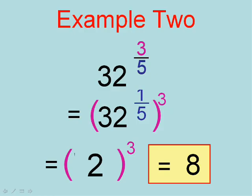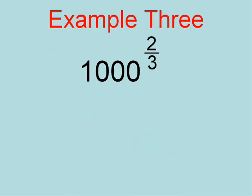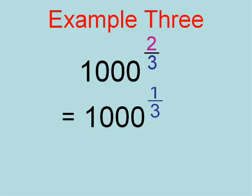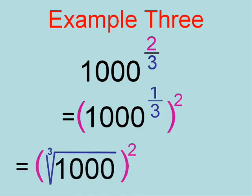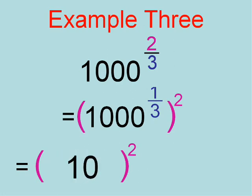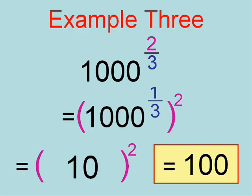We want to relax your brain so that you can see anything in an exponent — fractions, negatives, zero, or anything. A thousand to the two-thirds power, breaking it up into the two numbers: a thousand to the one-third, to the second power. A thousand to the one-third is the same as writing the cube root of a thousand, which is 10. And ten to the second power is a hundred. So a thousand to the two-thirds equals a hundred.